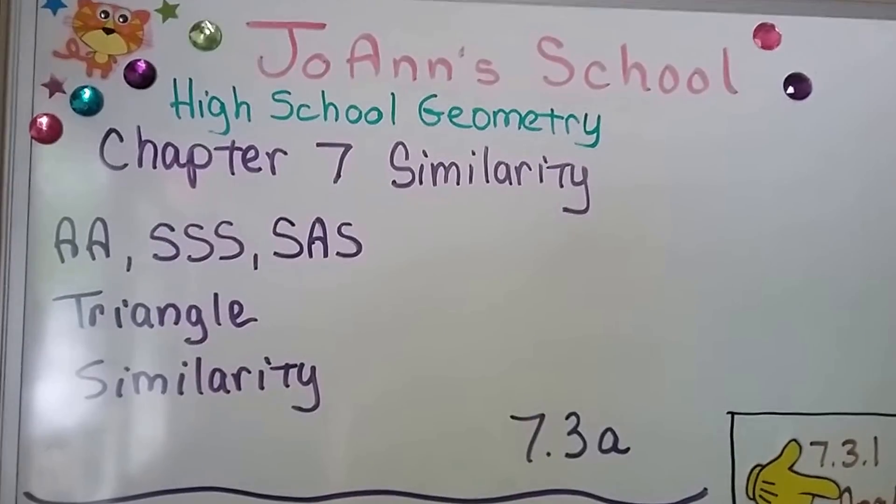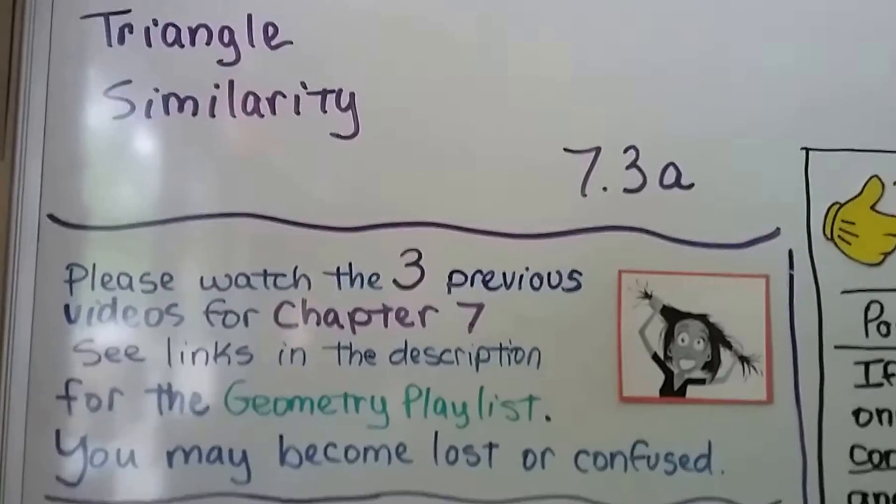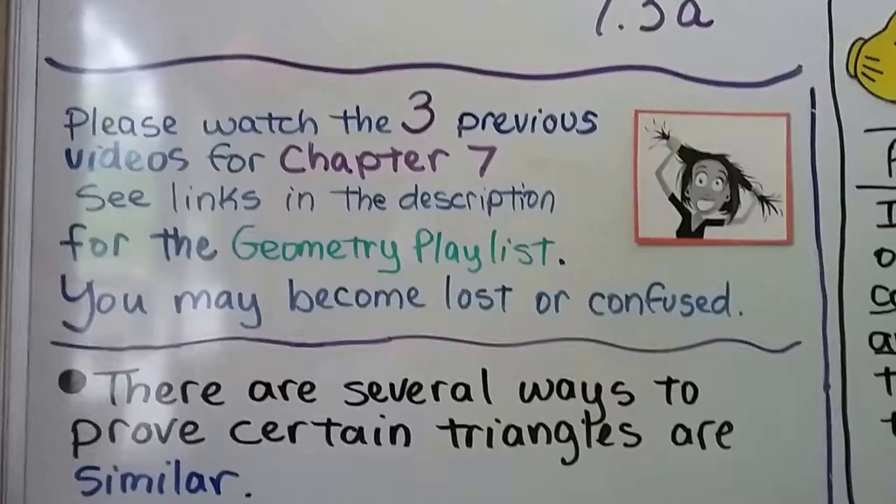AA, SSS, SAS Triangle Similarity. This is 7.3a. We have three previous videos for chapter 7 and they're in the geometry playlist if you need them.